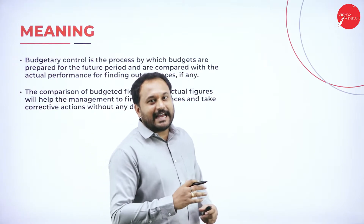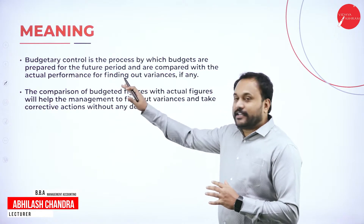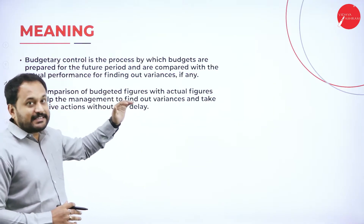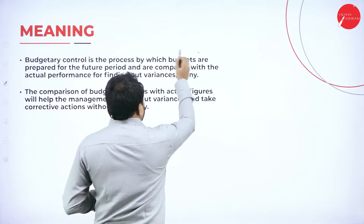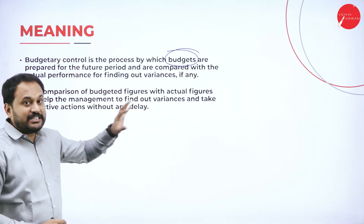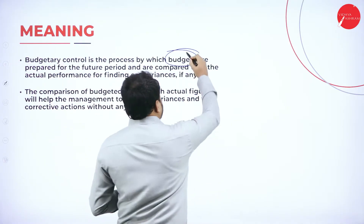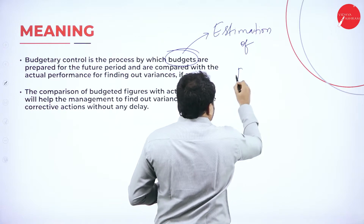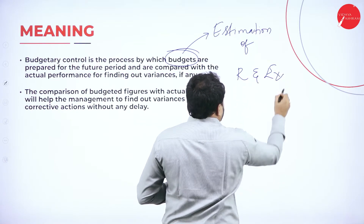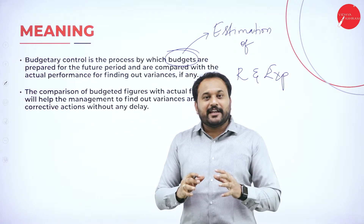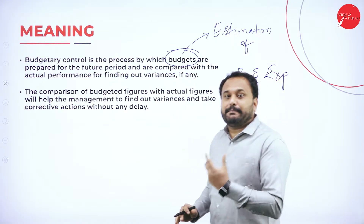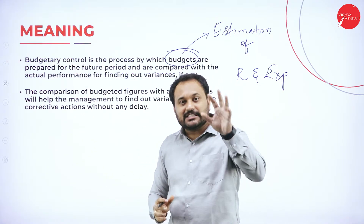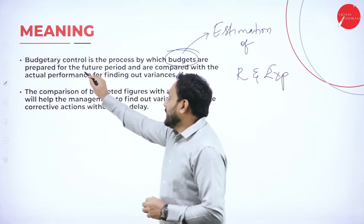Budgetary control is a process — you need to understand what exactly it is. To understand it, you need to know what a budget is. A budget is all about estimation — estimation of revenues and expenses. Budgetary control is a process by which budgets are prepared, meaning what exactly the revenue of the company is and what the expenses are. Each and everything is taken into consideration and estimated for the future period.